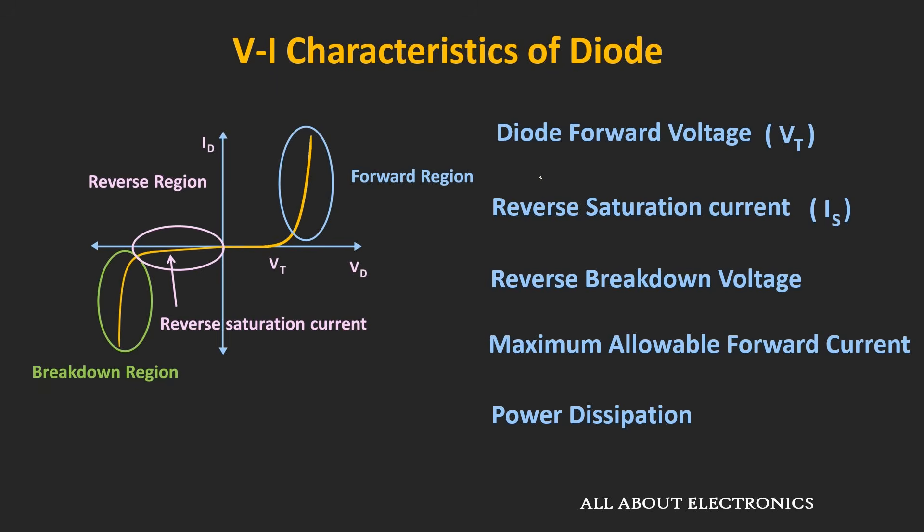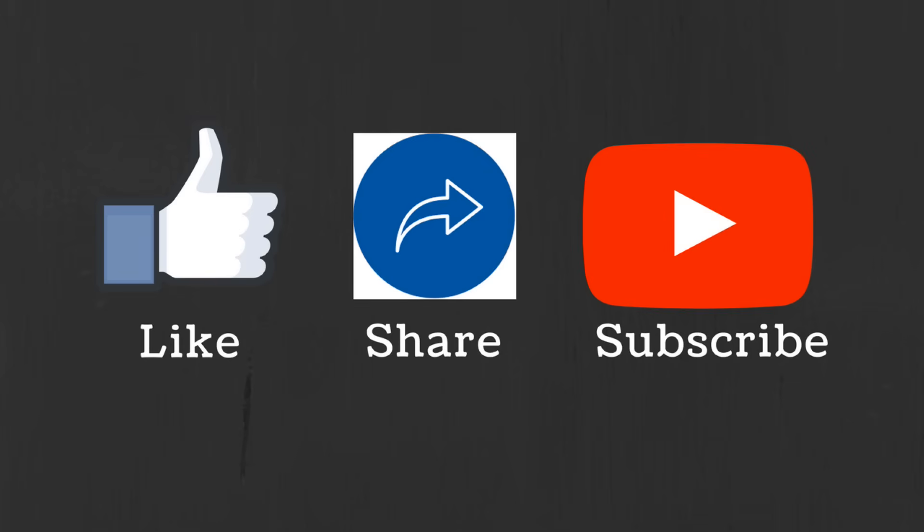In the next video, we will talk more about the diode resistance. I hope in this video you understood what a diode is and how the VI characteristic of the diode looks. If you have any questions or suggestions, let me know in the comment section below. If you liked this video, hit the like button and subscribe to the channel for more such videos.